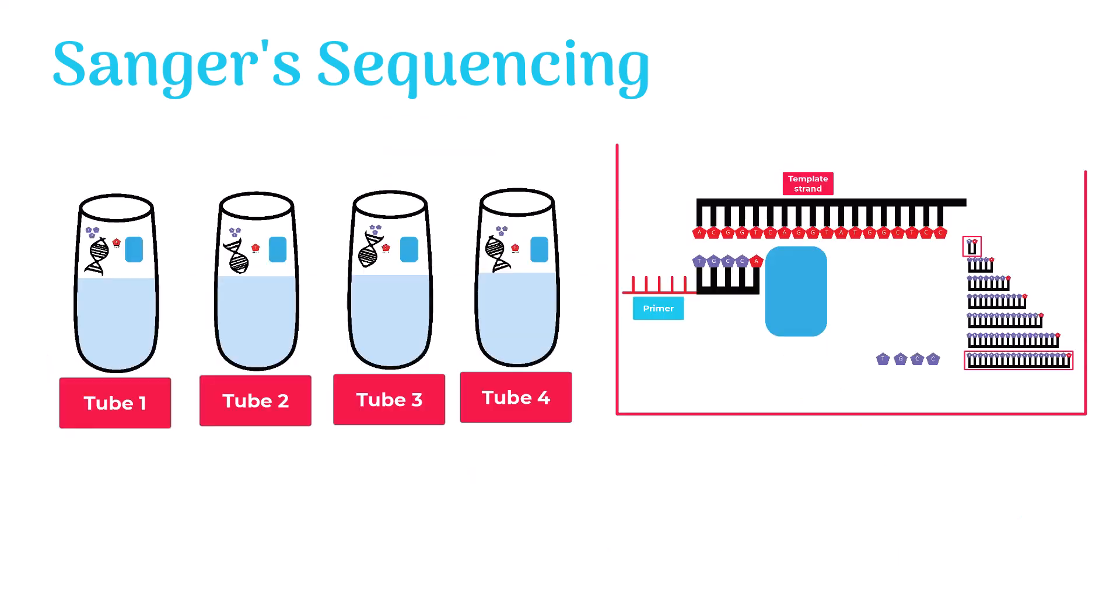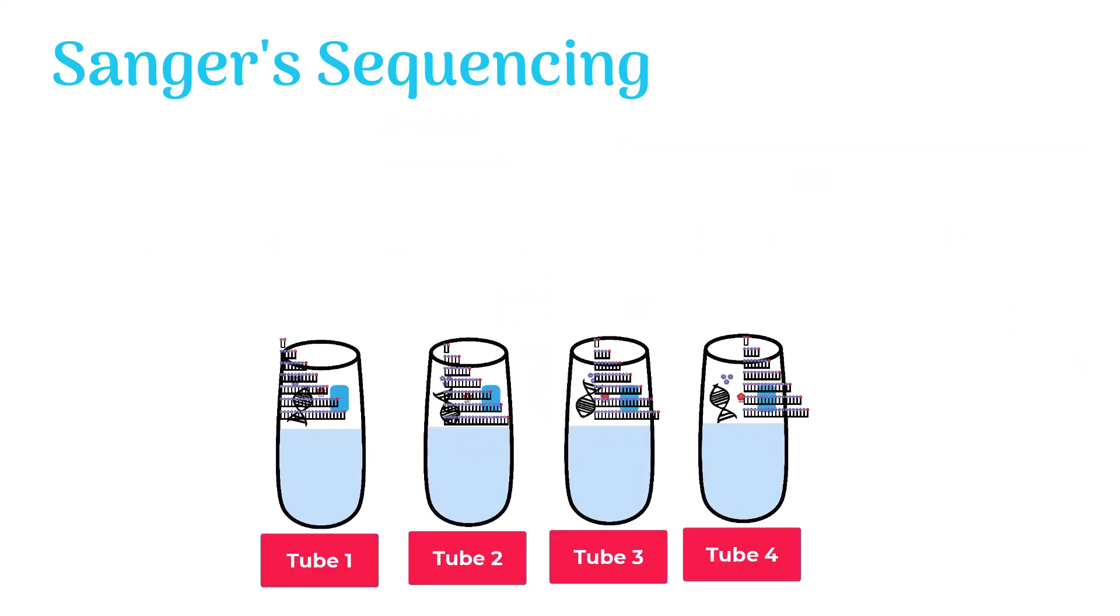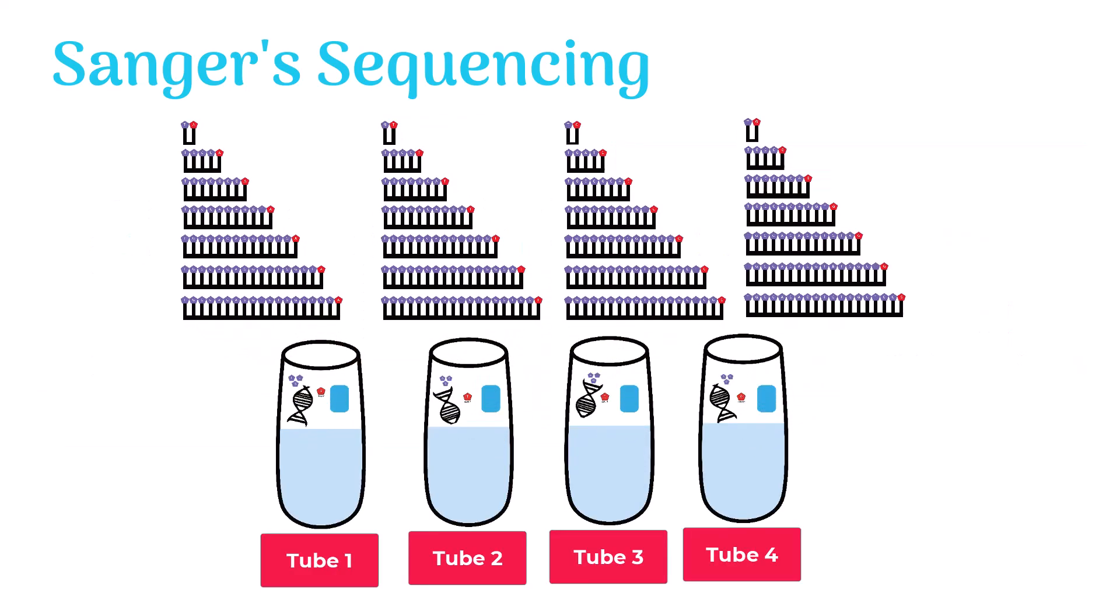This whole process runs in all four tubes. As a result, the formation of different fragments of DNA of different lengths takes place in all four tubes. For further analysis of their nucleotide sequence, we perform polyacrylamide gel electrophoresis and then autoradiography.